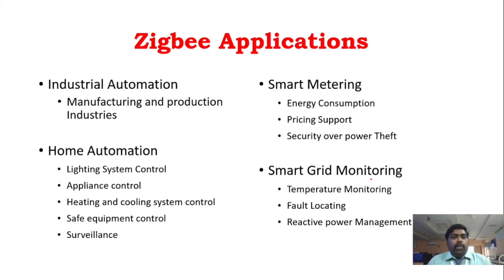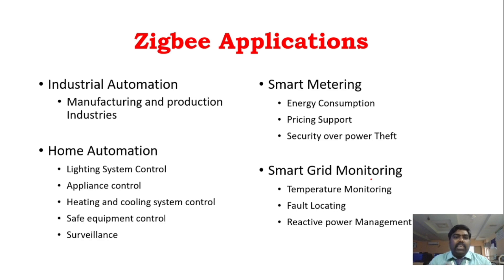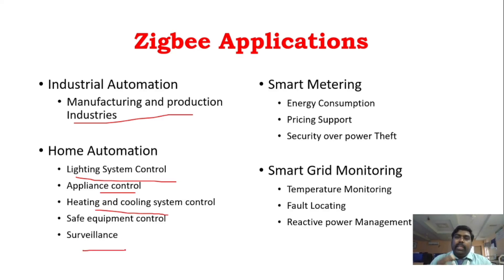Zigbee applications include industrial automation, home automation, smart metering, and smart grid monitoring. Sensors and control devices are well supported. Applications include manufacturing and production industries, home automation systems such as light control, heating and cooling control, and surveillance. Smart metering supports energy consumption monitoring, pricing, and power theft detection. Smart grid monitoring supports temperature monitoring and fault locating.